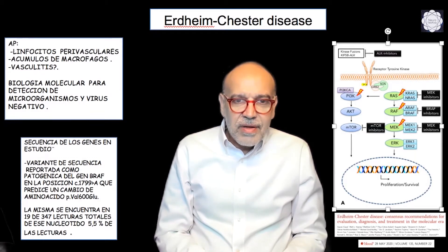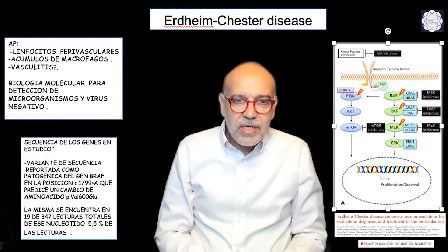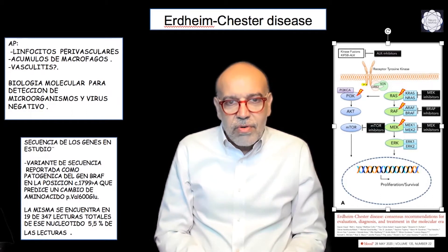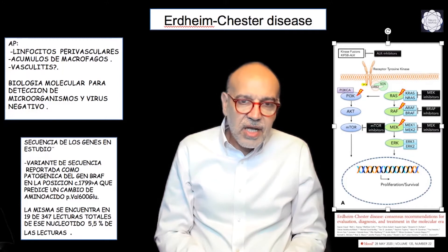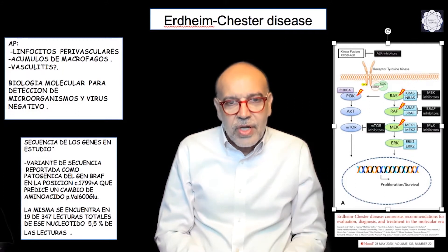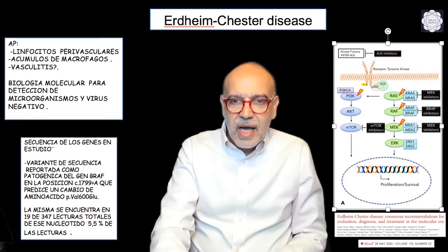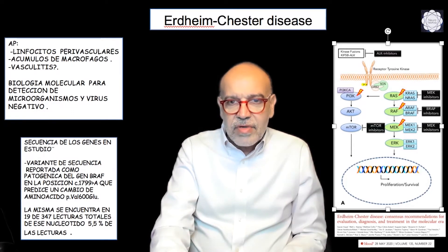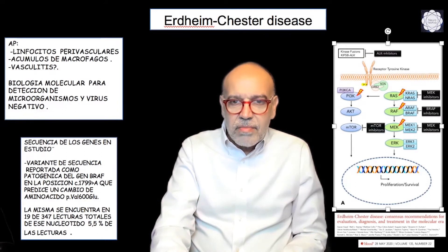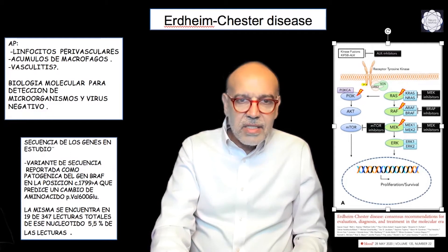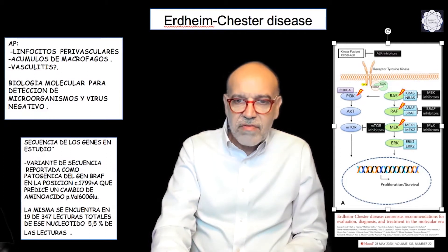They performed a genetic analysis, a sequencing that revealed a mutation in 5.5 percent of the reads for the RAF gene — the V600 mutation, which is very well known. Here at my left you can see the pathway of the MAP kinases: first you have the receptor of the tyrosine kinase, then RAS, RAF, MEK, and ERK, and finally the transcriptional factors in the nucleus. This pathway has to do with proliferation, survival, and mitosis.